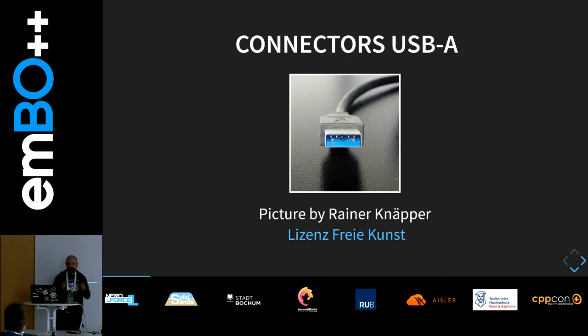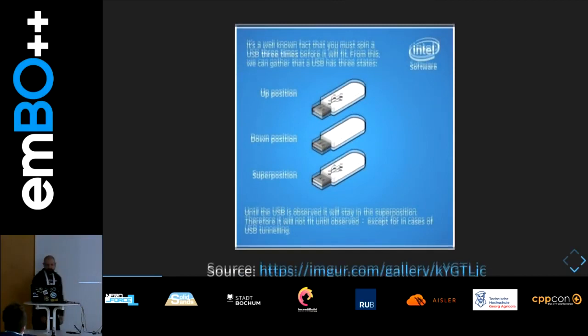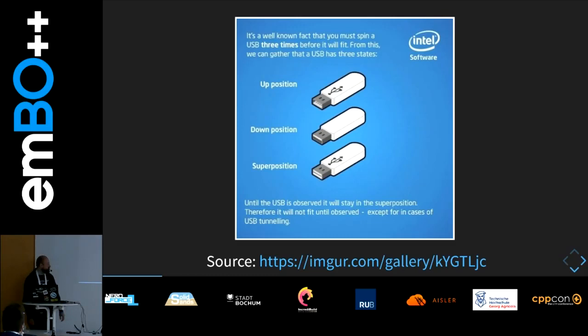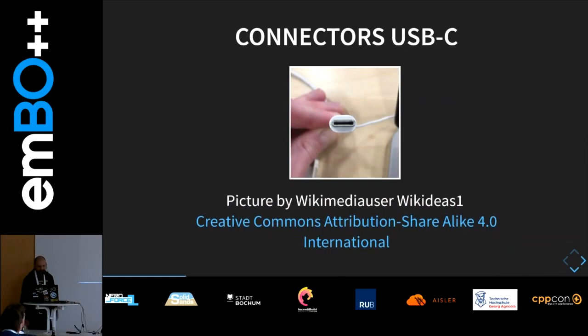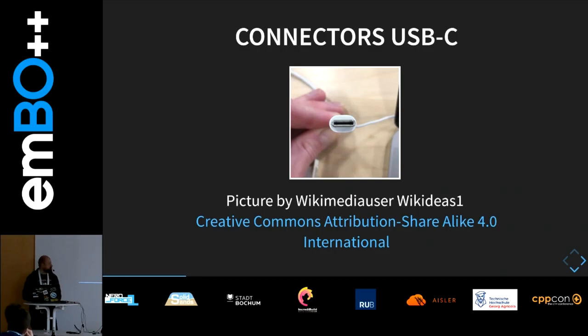Cables in USB 3.0 have a naming convention. The connection to the host device is a USB Type-A connector — you can see the USB 3.0 one in the picture. And everybody knows the problem with USB-A: you need three tries. The other side of the cable is called USB Type-B, in this case again with B3, and you connect it to the device that you want to connect.